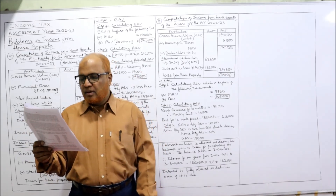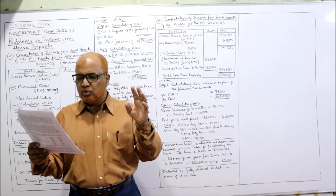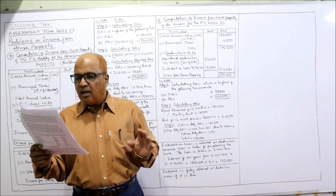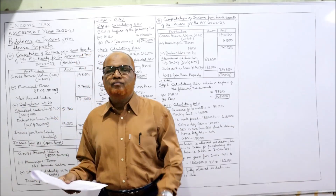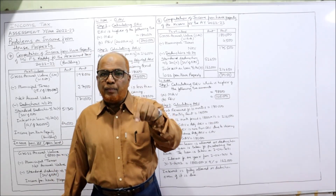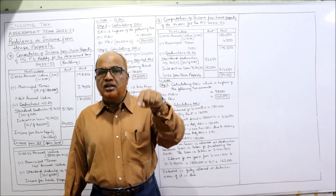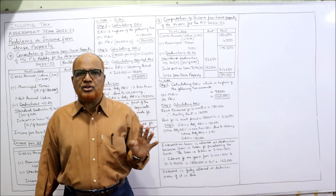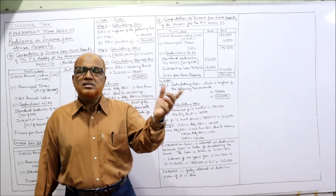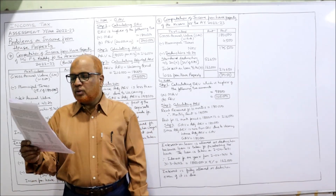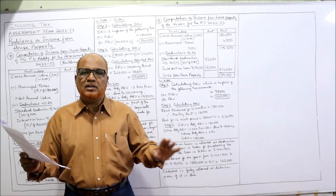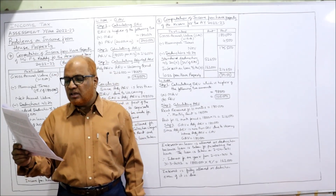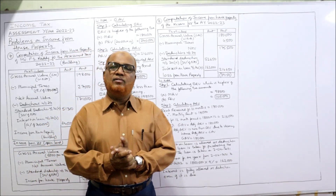Expenses paid: repairs — ignore; ground rent — ignore; municipal taxes 4,500 — allowed as deduction; collection charges — ignore; interest on loan is due but not paid. Remember: municipal taxes are allowed only if actually paid; if due but not paid, not allowed. Whereas interest on loan — whether paid or due — is fully allowed as deduction under Section 24B. Actual rent received during the year: 1,80,000, which is for 10 months (since the house was vacant for 2 months). Therefore, monthly rent = 1,80,000 ÷ 10 = 18,000 per month.